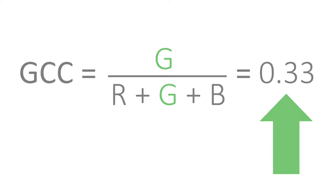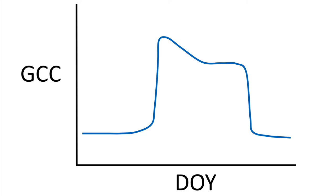We can make a graph of GCC against the day of the year to see the timing of transitions — for instance, when things green up or when things green down. Here's an example for a deciduous broadleaf forest with GCC increasing during spring bud break, remaining high over the summer, and decreasing during autumn leaf drop.